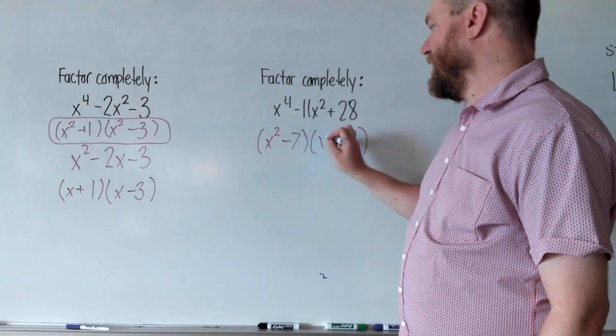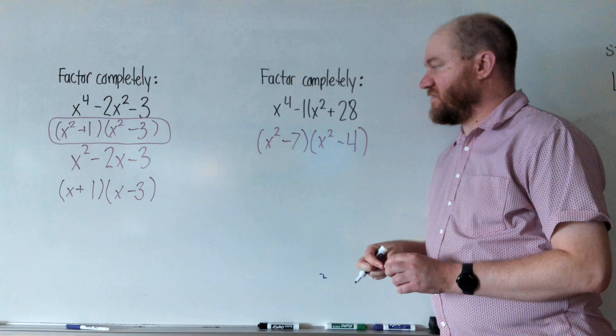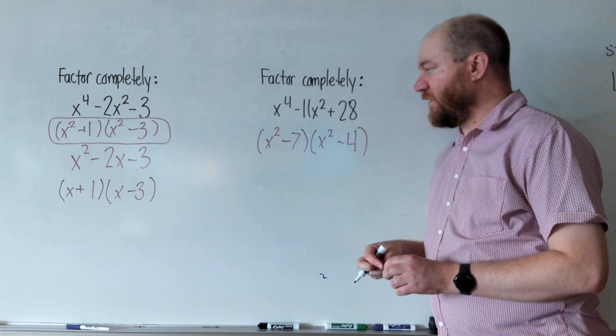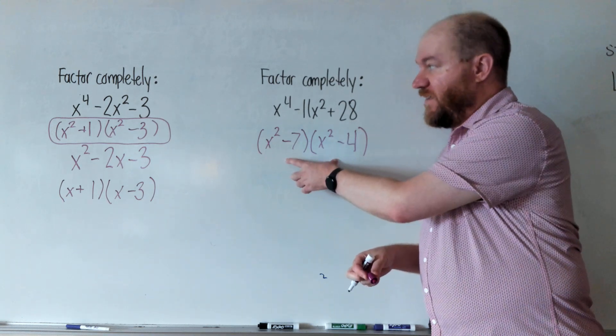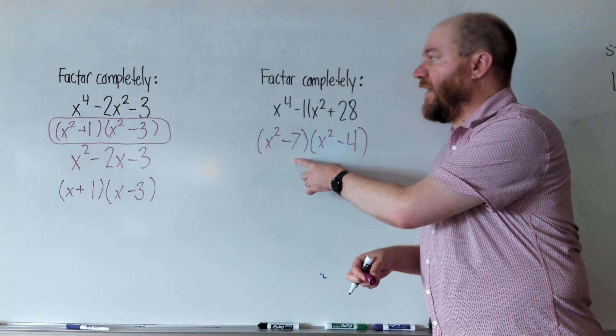This would be x squared, and this would be x squared, because I need those two to multiply to be x to the fourth. Now, if I wanted to check if these are correct, remember, you could do box method on this to actually multiply it out.